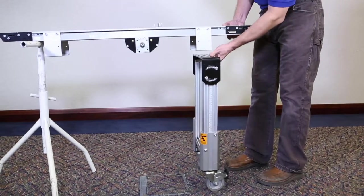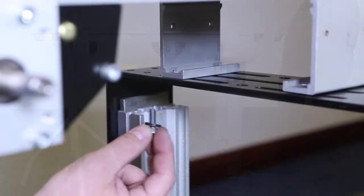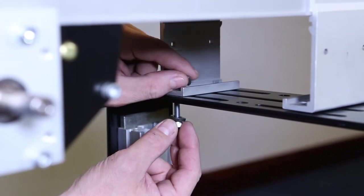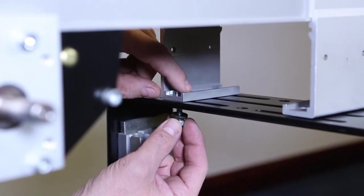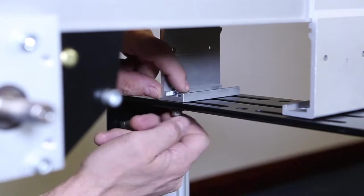Place temporary support stands under the conveyor as needed. Then fasten the bracket to the support stand with mounting screws, washers, and nuts. Repeat at all bracket locations and tighten all screws to 60 inch-pounds.